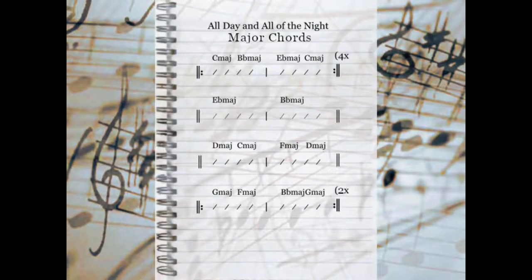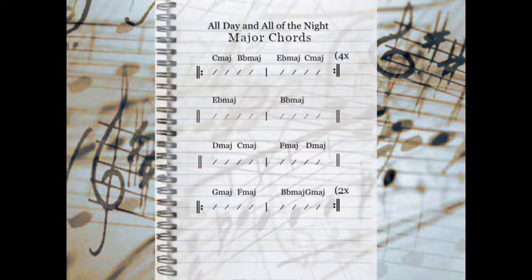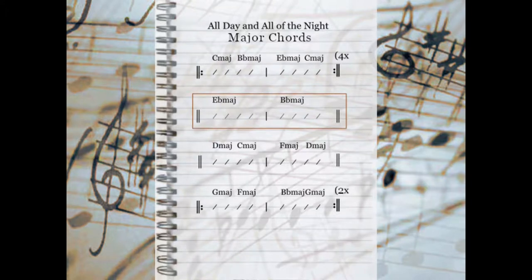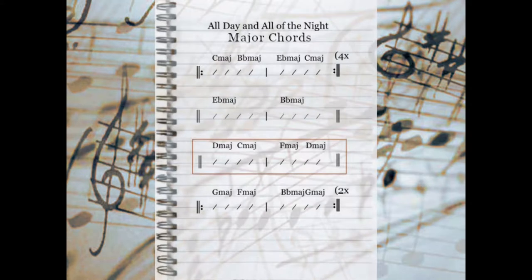Looking at this string of chords using the parallel relative switch system, we find that one chord doesn't fit within the theory if we're thinking of C as the overriding root chord. Nonetheless, we get the majority of chords explained. We're looking at C major and E-flat major. C is the 1 of C; B-flat and E-flat are respectively 5 and 1 of E-flat. Then we find D, C, and F — D is the problem chord, as there is no D major in either C or E-flat. C and F work as the 1 and 4 of C major.